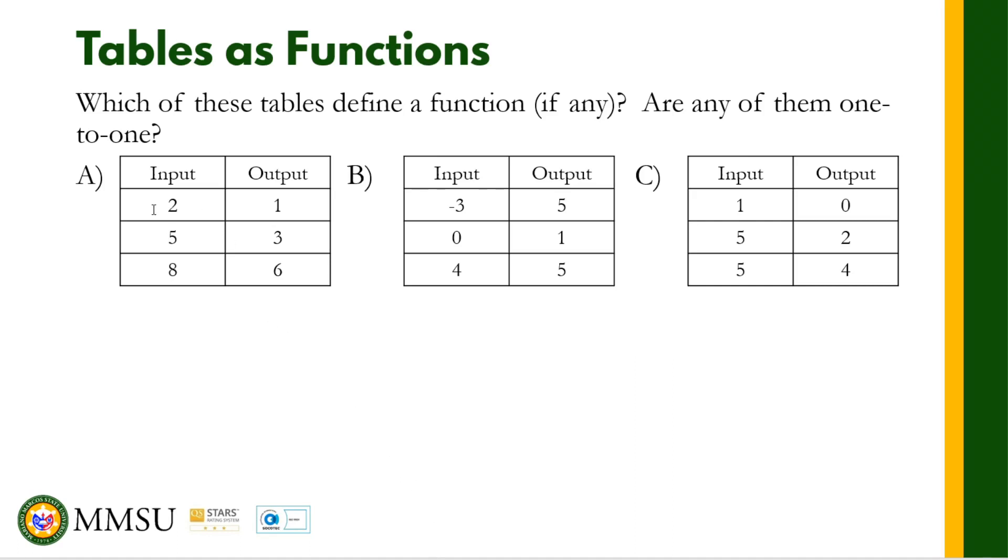Let us take a look at the first one, letter A. The input value is 2, the output value is 1. Input is 5, output is 3. The input is 8, the output is 6. As you can see, this one is an example of a one-to-one relation because the inputs are unique, the outputs are also unique. So this is a one-to-one function.